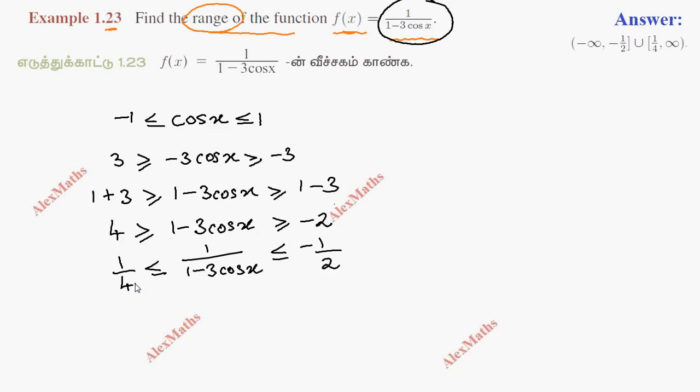So 1 by 4 less than or equal to 1 over 1 minus 3 cos x less than or equal to minus 1 by 2.